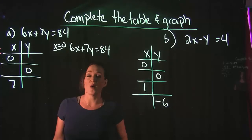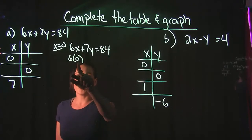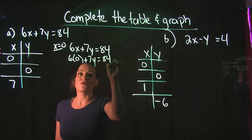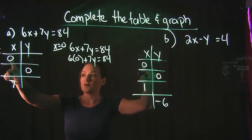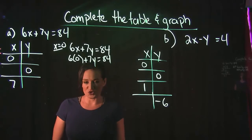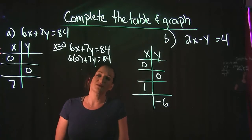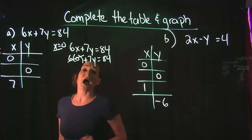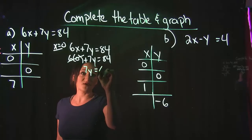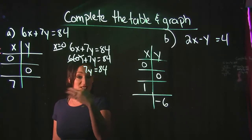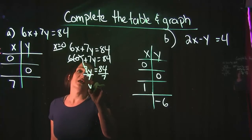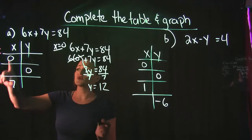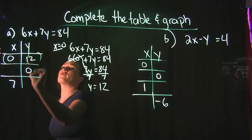Plugging in 0 for X, we keep everything else the same. Plugging in zeros is nice — both examples A and B use 0 for X and 0 for Y. These are always good values because multiplying by 0 makes equations easier. So 6 times 0 is 0, leaving us with 7y = 84. Dividing both sides by 7 gives us Y = 12. So when X is 0, Y is 12 — that's our first ordered pair.